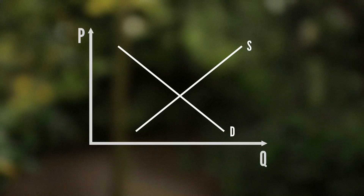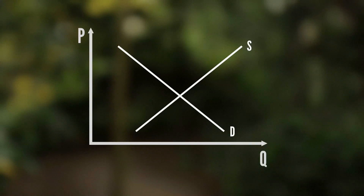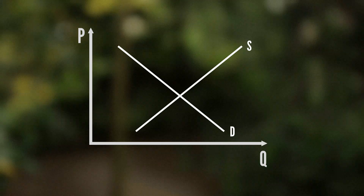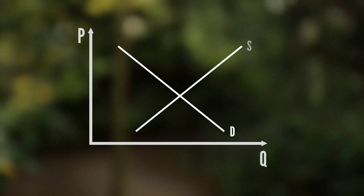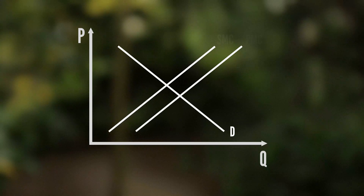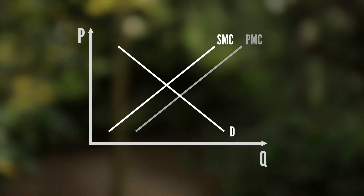On the surface, it looks much like the standard demand and supply model that you're all familiar with. Where it differs is that it realises that the private costs associated with supplying a good aren't always equal to the cost to society. Thus we have an extra curve representing the social marginal costs.